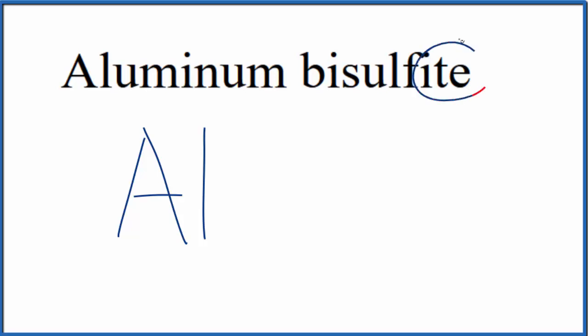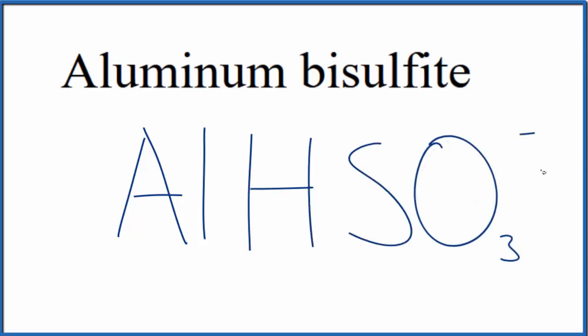The bisulfite, you see this ITE, you won't find that on the periodic table. You need to either have memorized that the bisulfite ion is HSO3 minus, or if you're allowed, look it up on a table of polyatomic ions. This is also called the hydrogen sulfite ion, and it's HSO3 minus. The minus charge goes to the whole ion.